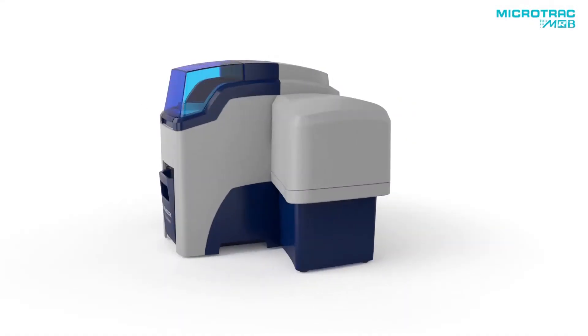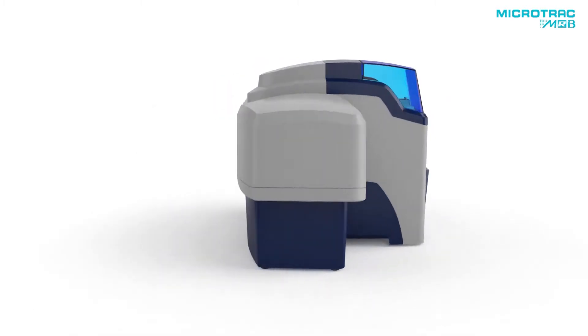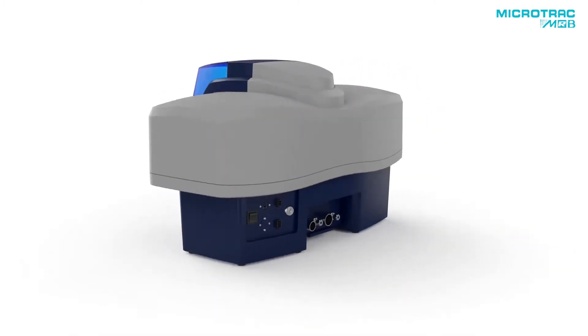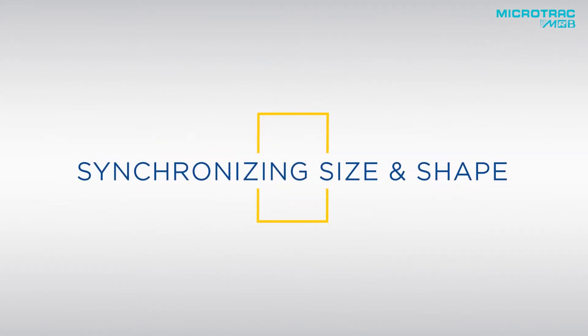Microtrack is changing the paradigm for material characterization. Size alone is not enough anymore. Shape and morphology are critical factors in understanding the properties and quality of materials.